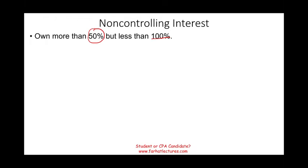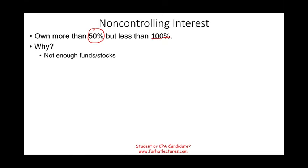Why would a company only own between 50 and 100%? There are many reasons. For one thing, you may not have enough funds or stock to buy the other company fully — you can only buy 60% or 90% because you lack the resources to buy the whole thing. Another reason is that not everyone you are purchasing stock from is willing to sell. Some stockholders want to hold on, thinking they'll get a better price down the road.